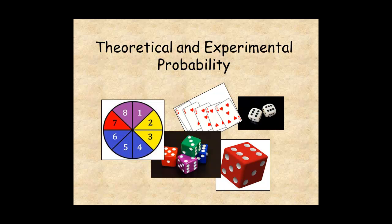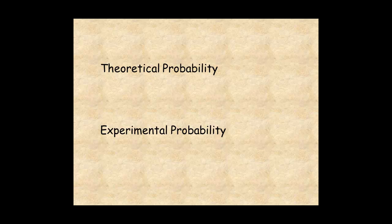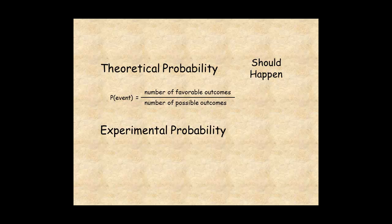This lesson helps you understand the difference between theoretical and experimental probability. Theoretical probability is what should happen when conducting a probability experiment, based upon the definition from the previous lesson. Experimental probability is what actually happens during such an experiment.